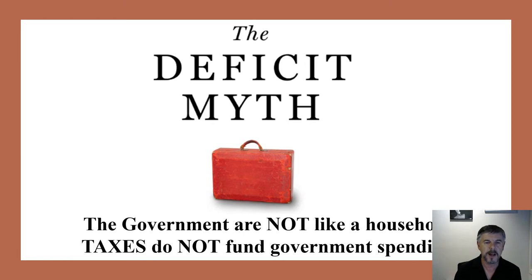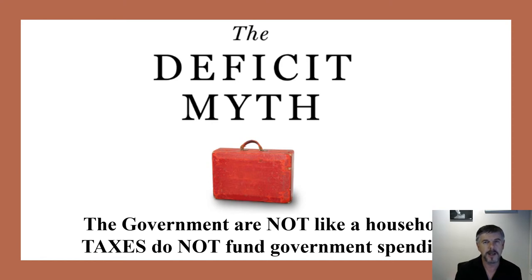We need to look at where this myth about deficits comes from. I believe it comes from the incorrect thinking — shared by many economists around the world — that the government must behave like a household. But the government is not like a household. They can issue their own currency. No household can do that. If you lived in a household that could issue its own currency, you wouldn't starve your children — which is essentially what governments are doing by trying to be fiscally responsible by not spending money.